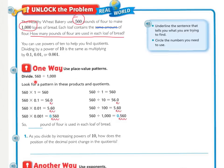We're dividing 560 pounds of flour by 1,000 loaves, looking for a pattern between the products and the quotients. 560 times 1 equals 560, and 560 divided by 1 equals 560. 560 times 1 tenth is 56, because you moved the decimal left one place. 560 divided by 10 equals 56, because you've moved the decimal left one place.